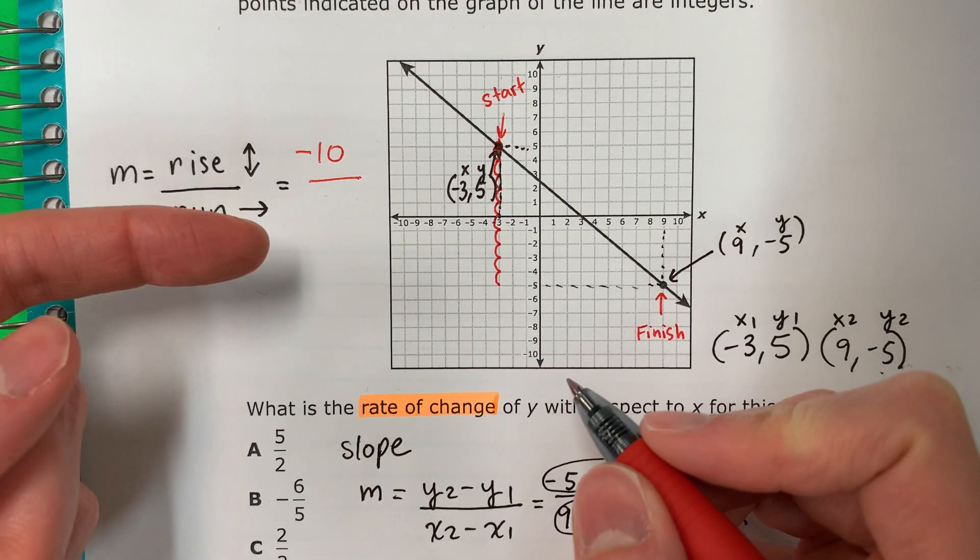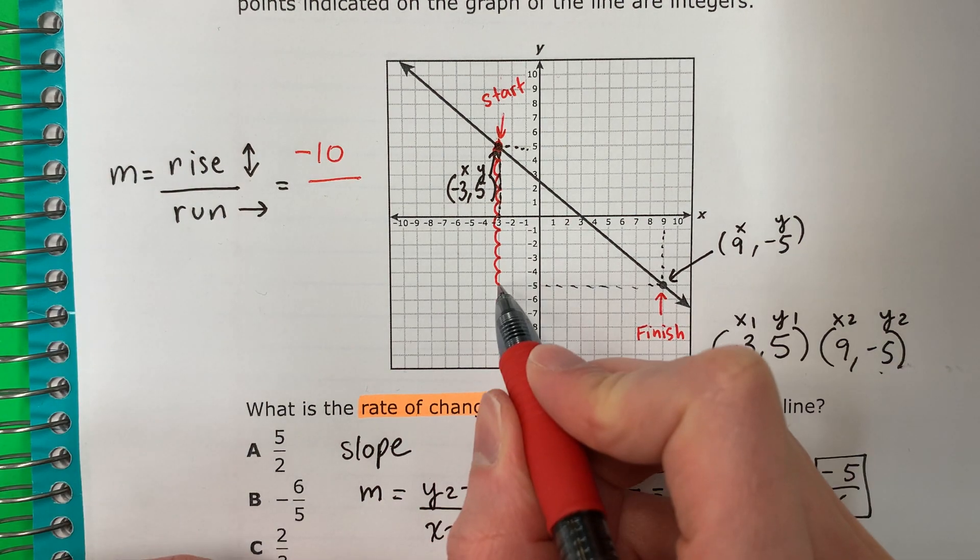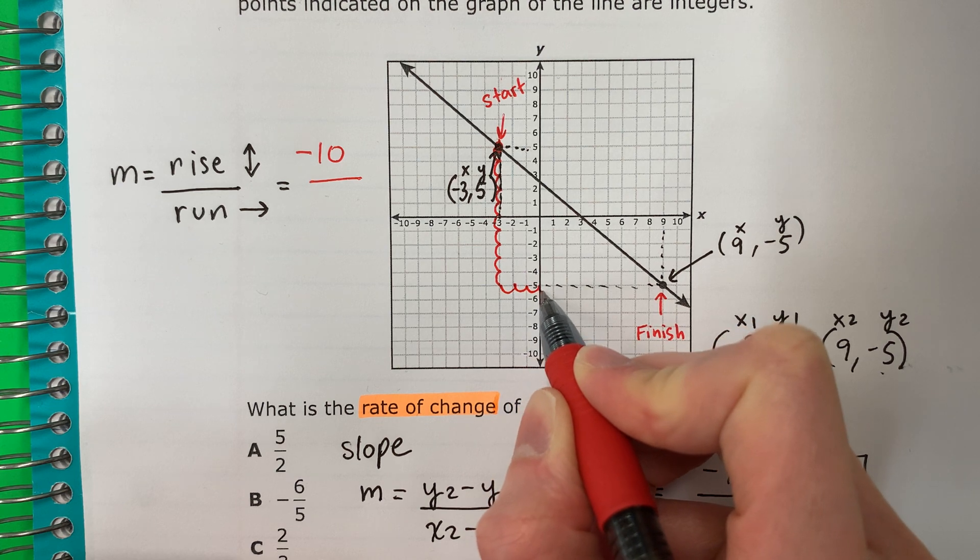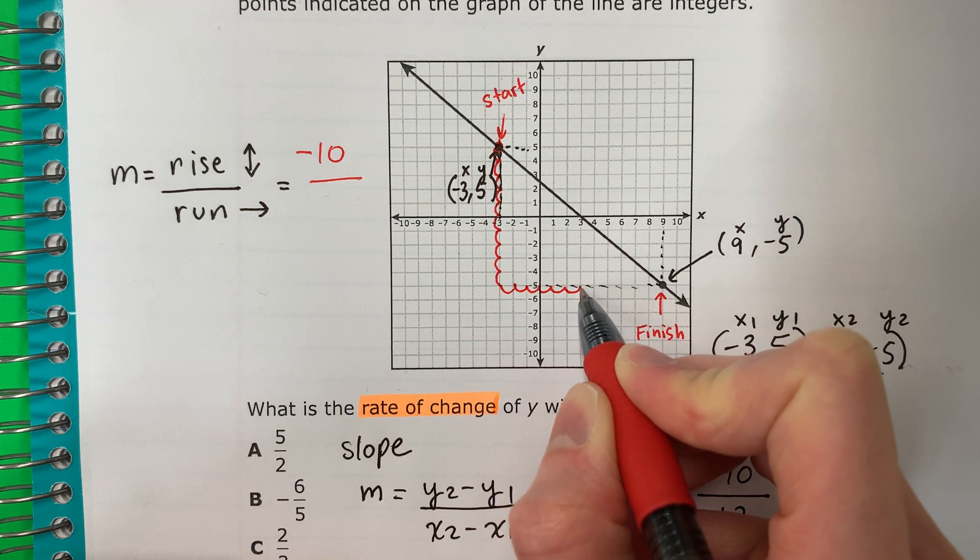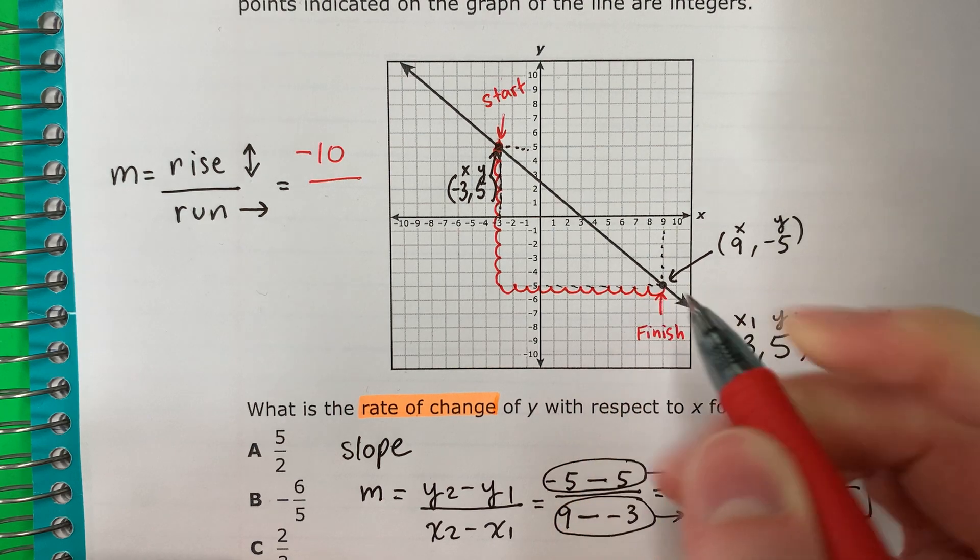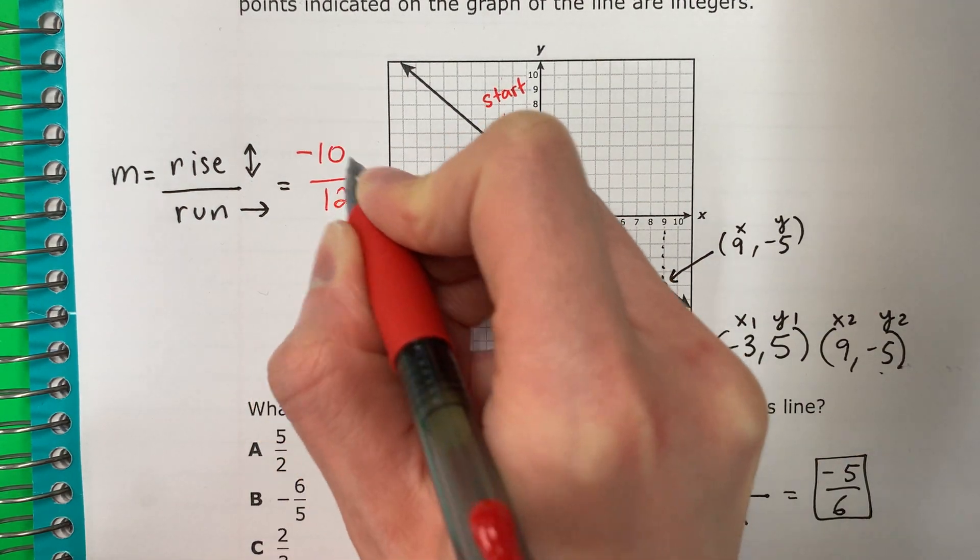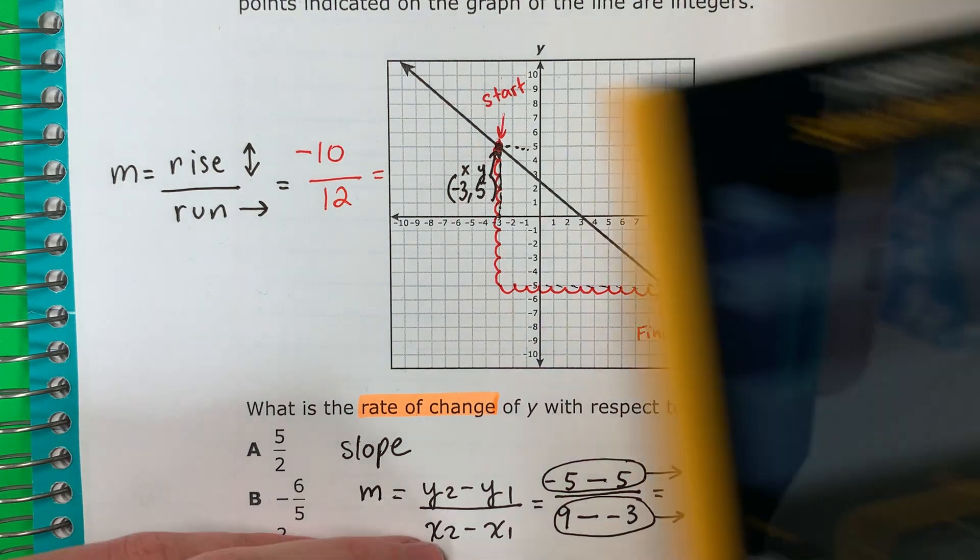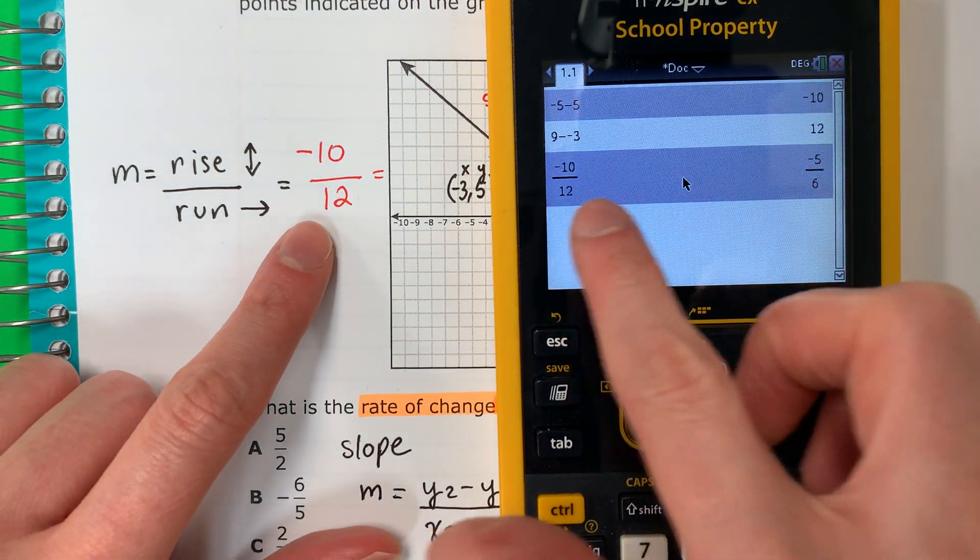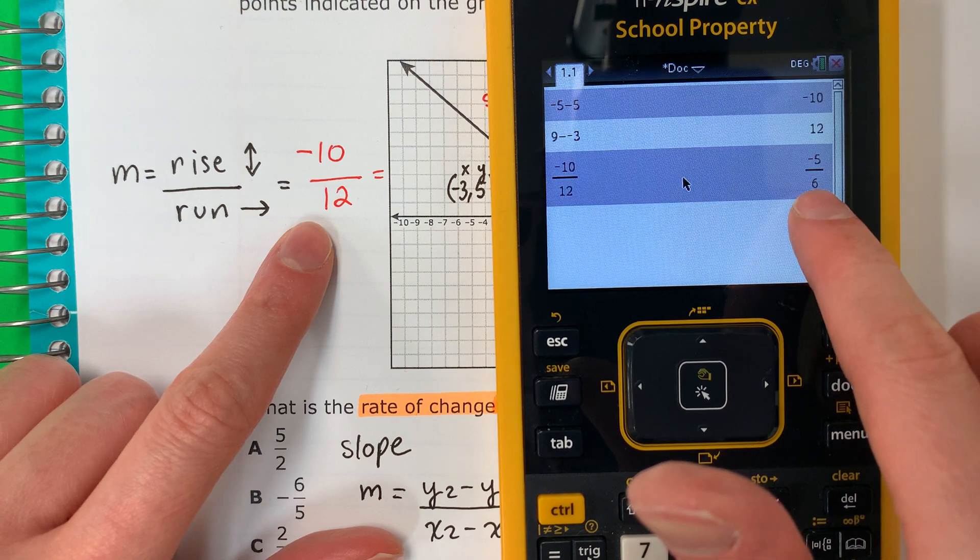Divide. Now we go to the right. Let's count. Zero, one, two, three, four, five, six, seven, eight, nine, ten, eleven, twelve. Twelve. Let's put that in the calculator. And we already have it. Negative ten divided by twelve. Negative five sixths.